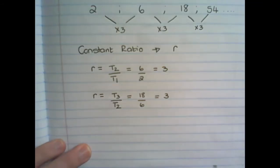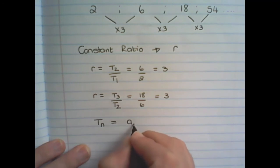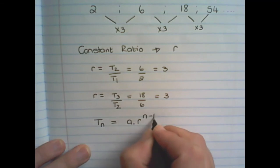Which also means that a constant ratio, or a geometric number pattern, has a different set formula. And the set formula is A times R to the power of N minus 1.